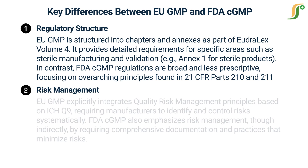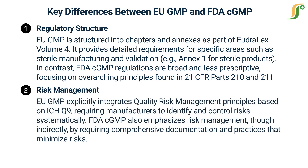On risk management, EU GMP explicitly integrates quality risk management principles based on ICH Q9, requiring manufacturers to identify and control risks systematically. FDA CGMP also emphasizes risk management, though indirectly, by requiring comprehensive documentation and practices that minimize risks.